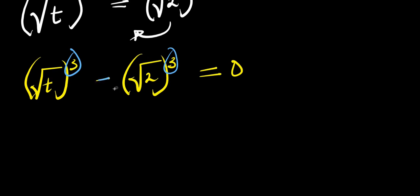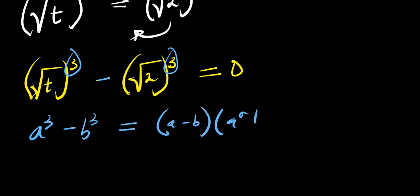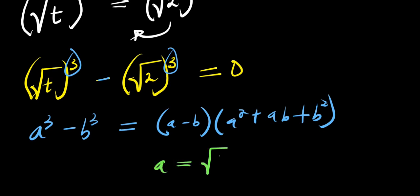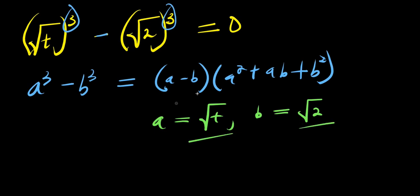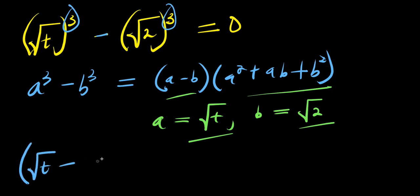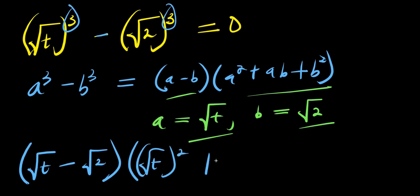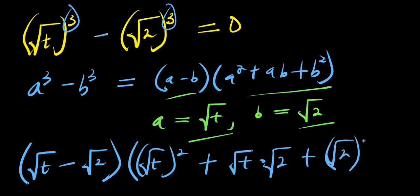At this point we have power three here and power three here with a minus, so we expand using the cubic identity. If you have a cubed minus b cubed, this equals a minus b times a squared plus ab plus b squared. In this case, a equals root t and b equals root two. Substituting, we get root t minus root two, times: square root of t squared, plus root t times root two, plus square root of two squared, equals zero.